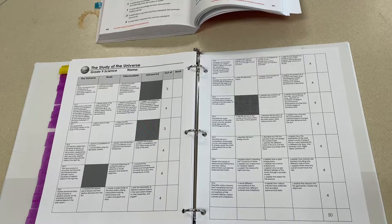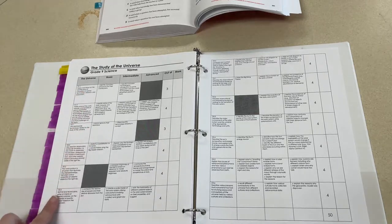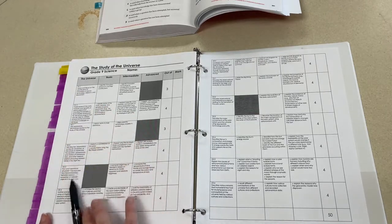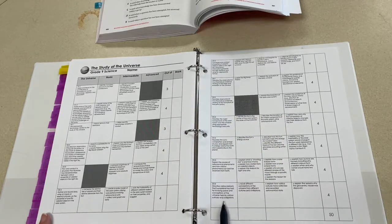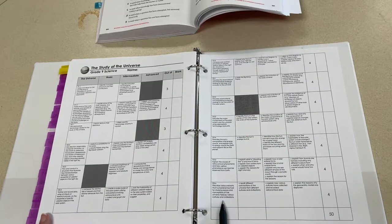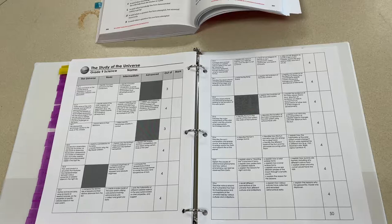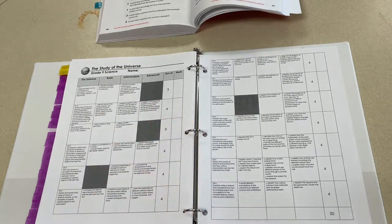This starts by breaking down your curriculum. I have all my curriculum expectations for this unit written on the left side of these pages, and then breaking each expectation down into basic, intermediate, and advanced.